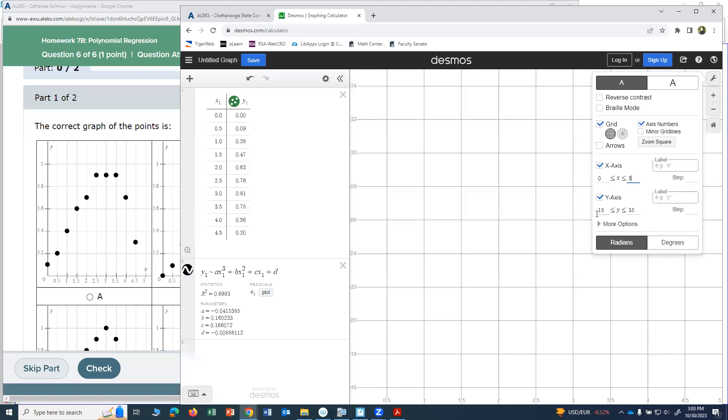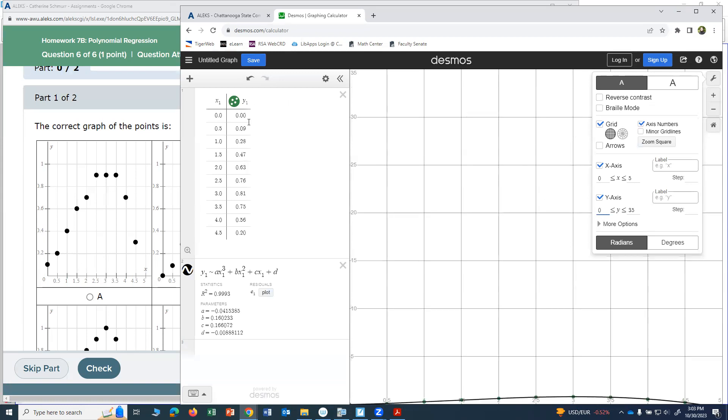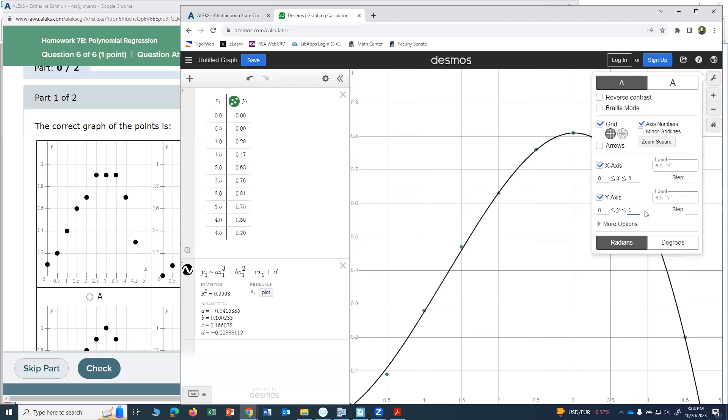But for the Y, I'm going to do zero as my lower. It wouldn't make sense to have negative numbers in this example. And then my highest, if I look here, my highest is 0.81, so I might go ahead and do 1 as my highest.